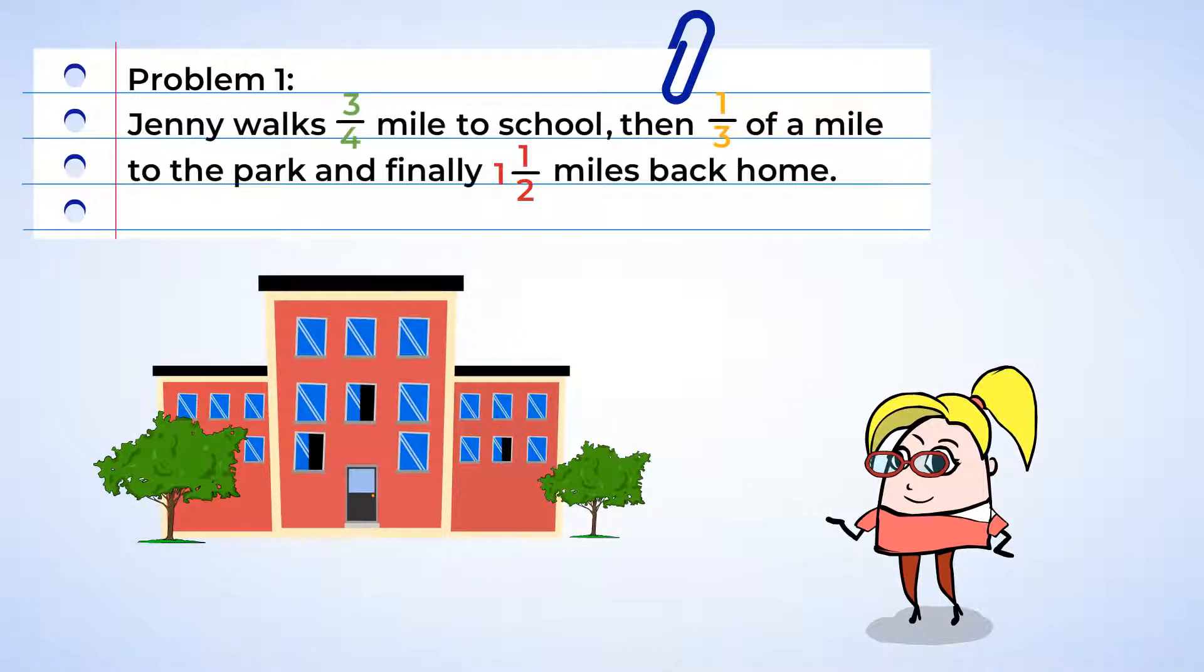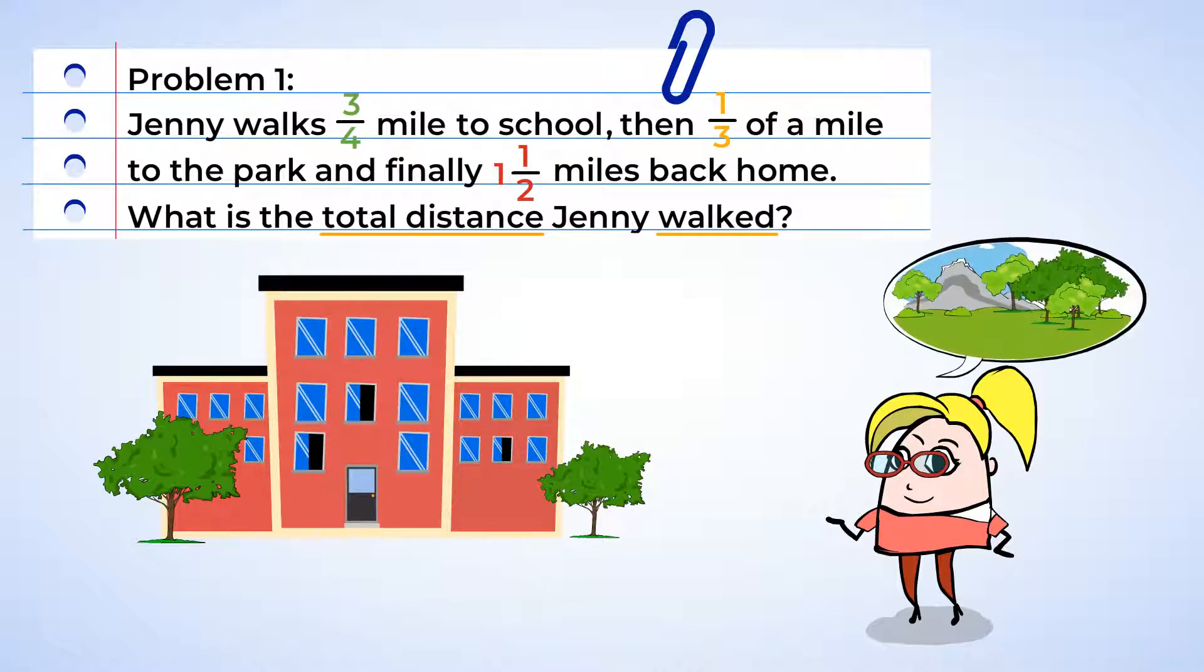Jenny walks three quarters of a mile to school. And after school, she walks one third of a mile to the park. And then she walks another one and a half miles back home. What is the total distance Jenny walked?